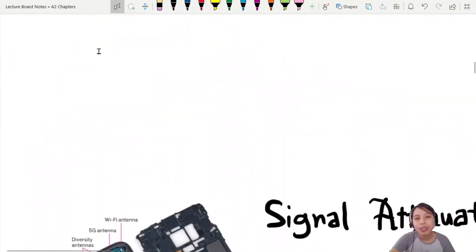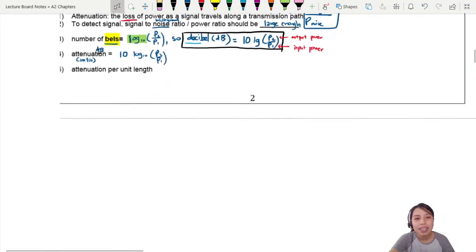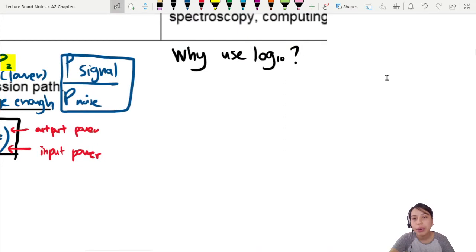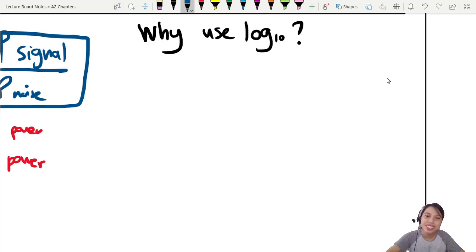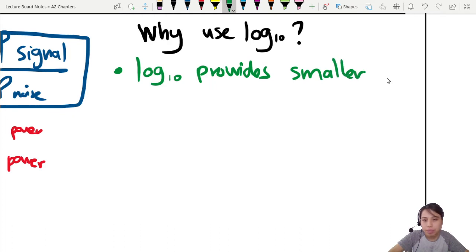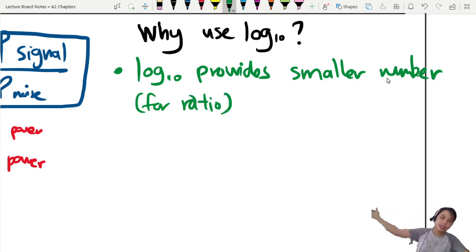But what about signals? Let's go back to signals. Why we use log 10? The reasons they will ask you to usually explain. Reason number one, you could say something that the log 10 provides smaller numbers for us to work with. It provides a smaller number for our ratios. What a log does is it takes a very large number, scales it down. So it's easier to calculate, easier to deal with. No need to draw so many zeros.